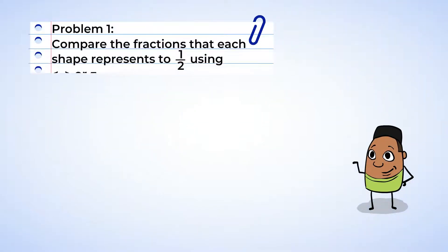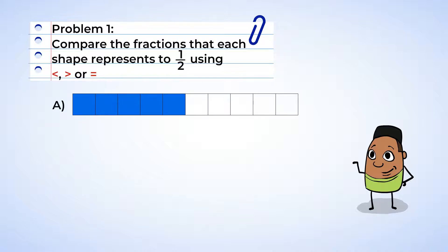Okay, a math problem coming your way. You need to compare the fractions that each shape represents to one-half using less than, greater than, or equal. Starting with shape A, we will create a rectangle the same size with one-half shaded. Now since there are a total of ten sections, half of ten is five. So our fraction that represents one-half should have five sections shaded in. And look at that. They're the same. So we're going to use the equal sign to show that they are equivalent.